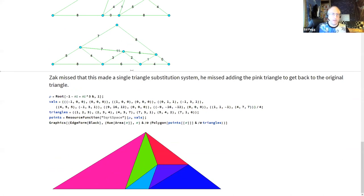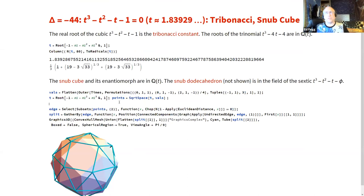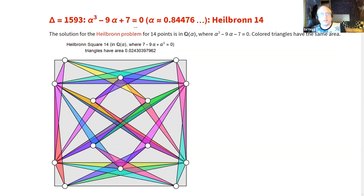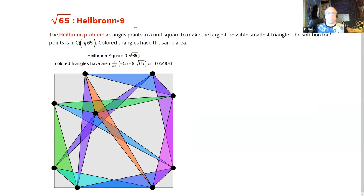The Tribonacci constant lets you build the snub cube out of simple permutations using it as the root. It doesn't work well by itself, but when you square everything, it all works like magic with a super nice representation. Similarly, the Heilbronn 12, 7, 10, 14, 8, and 9 problems all use specific roots, and once you go into this algebraic space and square the values of the vertices, everything works out nicely.